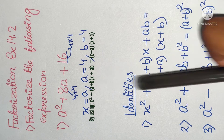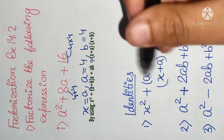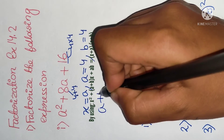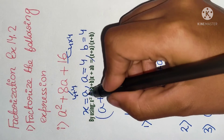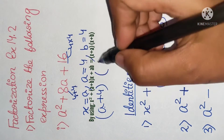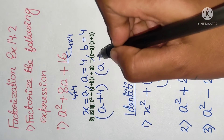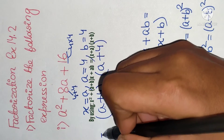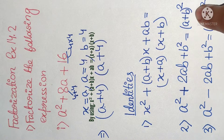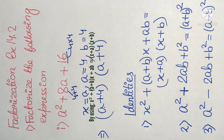So we can write it as (x + a)(x + b). Here the value of x is a, and a is 4, so we write (a + 4)(a + 4). You can also use another identity to factorize this expression, which will be your homework. Factorize it using that identity and send the picture in the Telegram group, the link of which will be given in the description box.